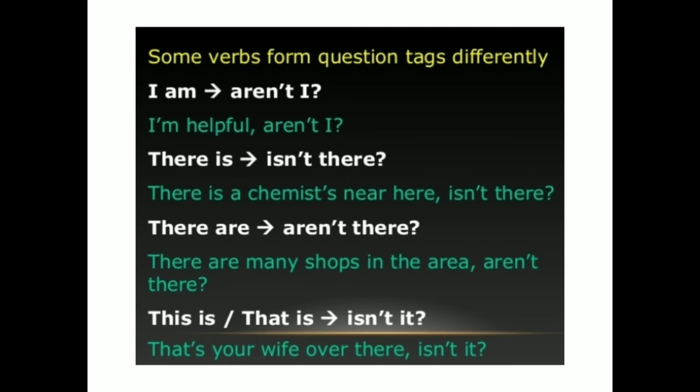Here are some verb forms that use question tags differently. 'I am' uses 'aren't I?' — for example: 'I am helpful, aren't I?' 'There is' uses 'isn't there?' — for example: 'There is a chemist near here, isn't there?' 'There are' uses 'aren't there?' — for example: 'There are many shops in the area, aren't there?'